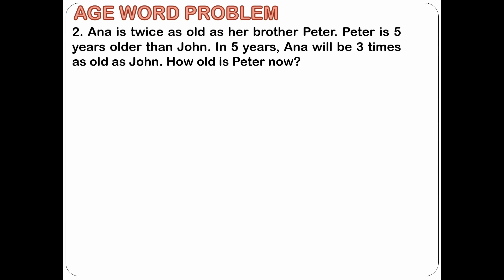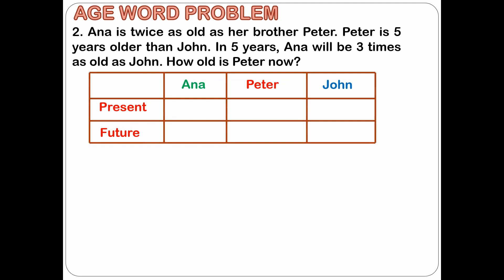Let's solve one more problem. In our previous problem we solved 2 unknowns, but this time we will solve a problem with 3 unknowns. Here is our problem number 2. Anna is twice as old as her brother Peter. Peter is 5 years older than John. In 5 years, Anna will be 3 times as old as John. How old is Peter now? There are 2 keywords: the present and the future. There are 3 persons involved: Anna, Peter, and John. The best way to start is to set up a table to clearly write an equation for each person under the present and future time period.